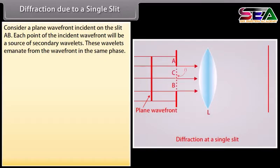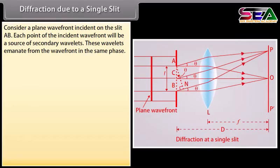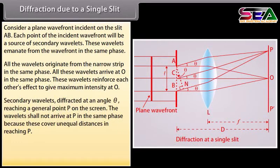Diffraction due to a single slit. Consider a plane wavefront incident on the slit AB. Each point of the incident wavefront will be a source of secondary wavelets. These wavelets emanate from the wavefront in the same phase. To understand the formation of central maximum, the slit can be imagined to be divided into a number of very narrow strips of equal width parallel to the slit. All the wavelets originate from the narrow strip in the same phase. All these wavelets arrive at O in the same phase. These wavelets reinforce each other's effect to give maximum intensity at O.